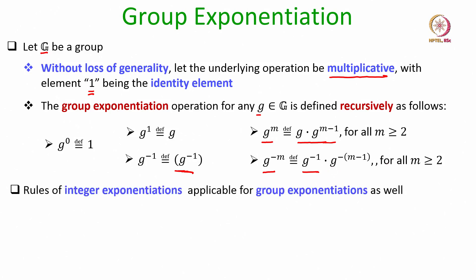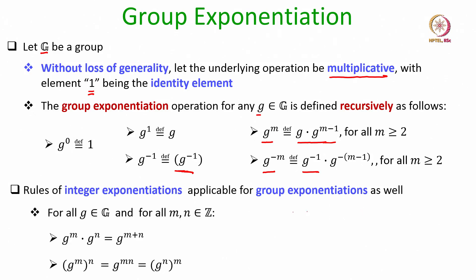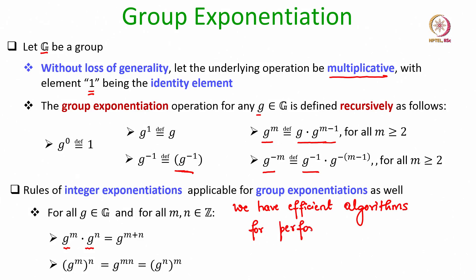It is easy to see that the rules of integer exponentiation are applicable even for group exponentiation. Namely, if I apply the group operation on the elements g^m and g^n, I will obtain the group element g to the power m plus n. We also have efficient algorithms for performing group exponentiation.